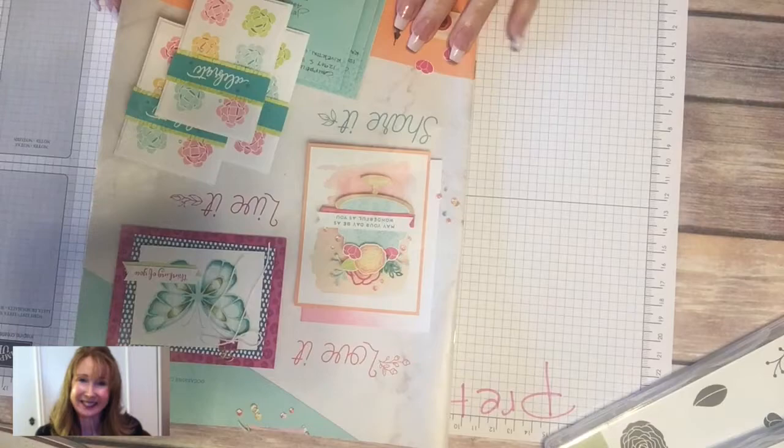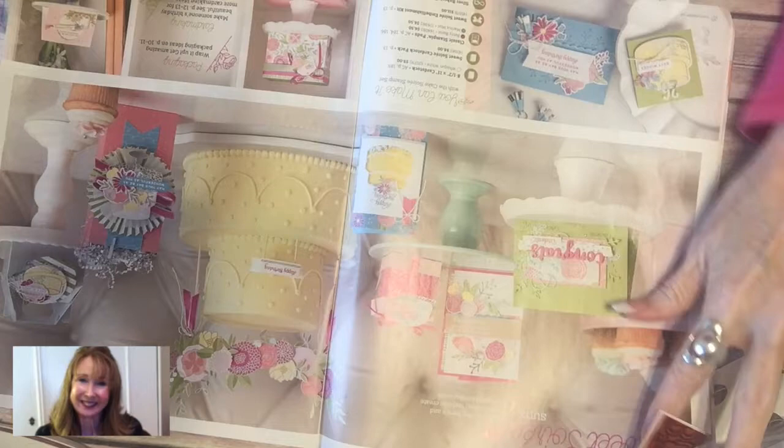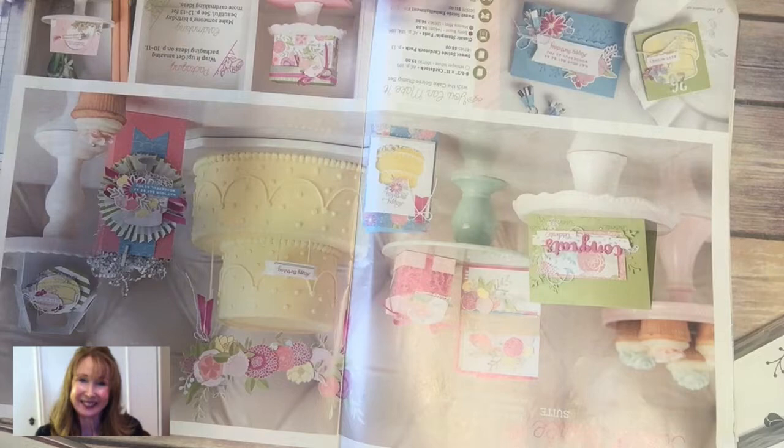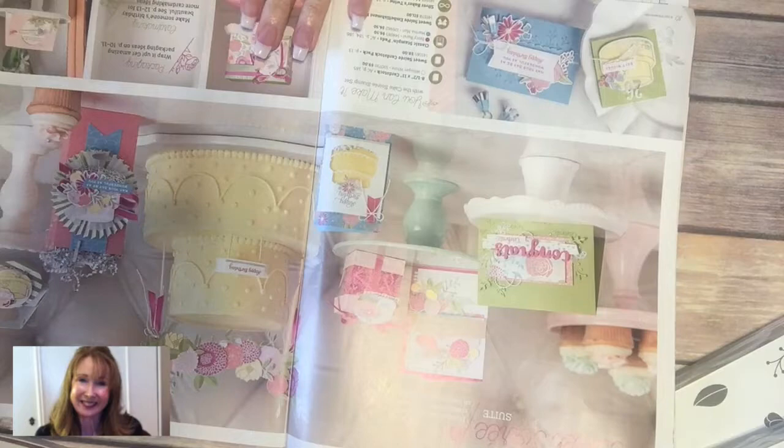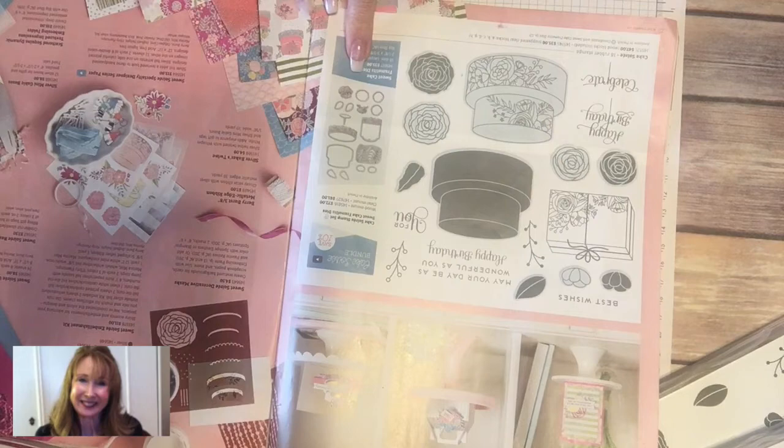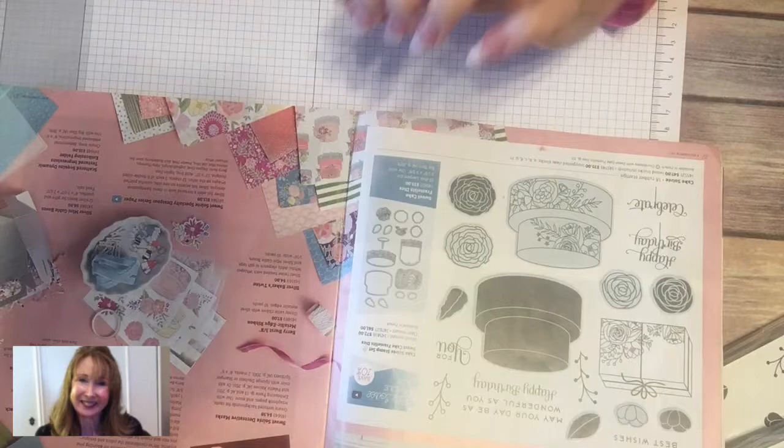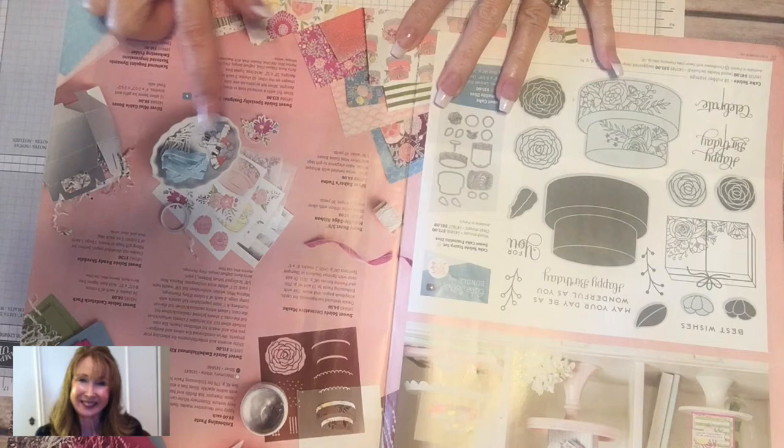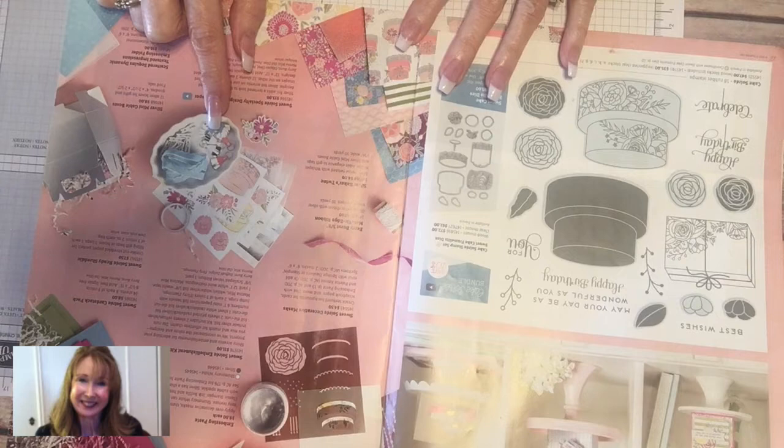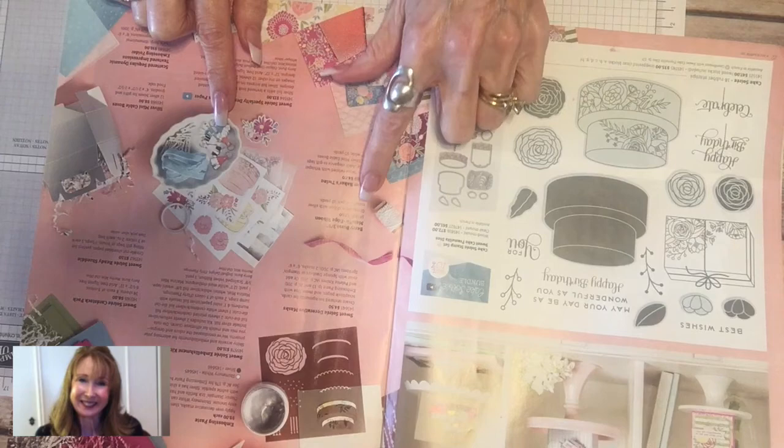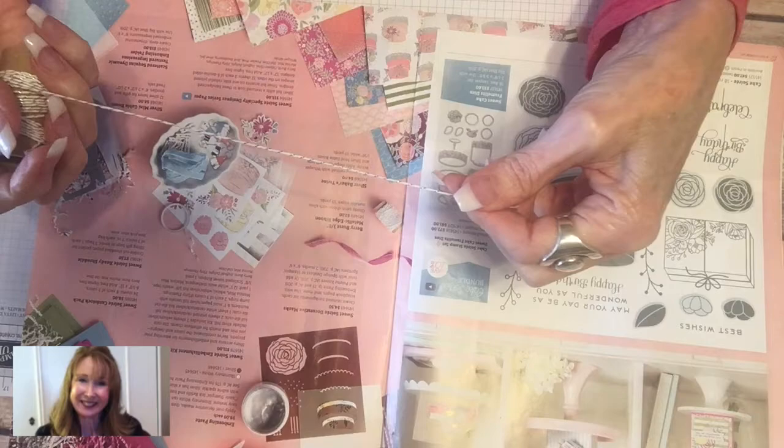It has a full two page spread all about this stamp set with different suggestions of what you can make. Here's a picture of the stamp set and the dies that come with it, although we're not going to use the dies today. Here are the papers, and this is a better picture of what's in the embellishment kit that we're going to use today. It's super cute, only $11 and helps you make a really fast card. We're also going to be using the silver baker's twine today. I just love this silver baker's twine.